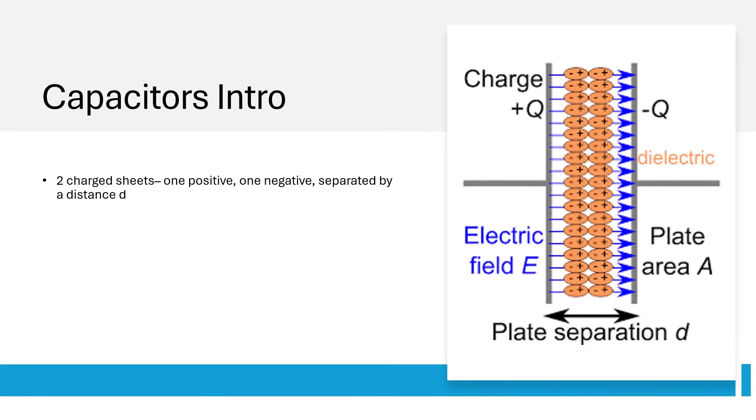Capacitors are systems that include two differently charged sheets of material spaced out from each other. One sheet is positive and the other is negative. In an ideal capacitor, the charge that resides on each surface is equal in magnitude to the capacitance times the potential difference.